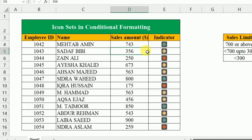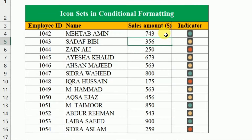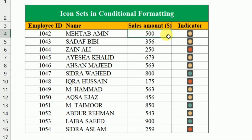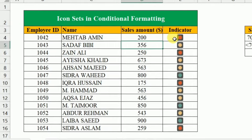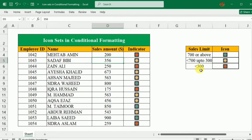These indicators will change automatically. If the data is more than 700, its color is green. If I change it to 500, it will go to the second category and its color will be yellow. And if it is 200, then its color will be red, because now it is in the third category.